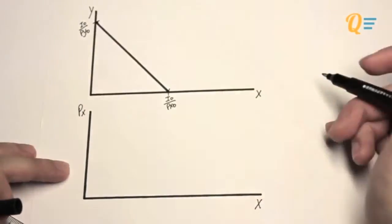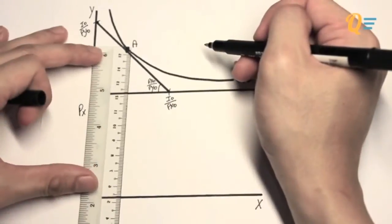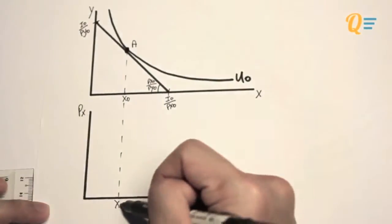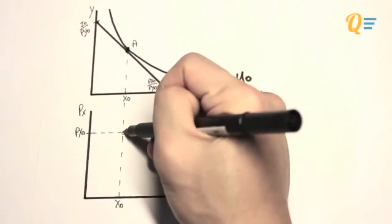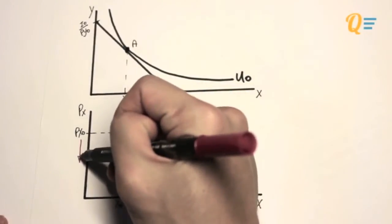For the graph on top, I'm just going to establish my initial equilibrium, just like how I usually do. But this time, I'm going to extend point A all the way to the bottom graph. So I'm going to label that as X0. And I know that initially, the price of X is P0. So the corresponding price and quantity will give me point A on the graph below.